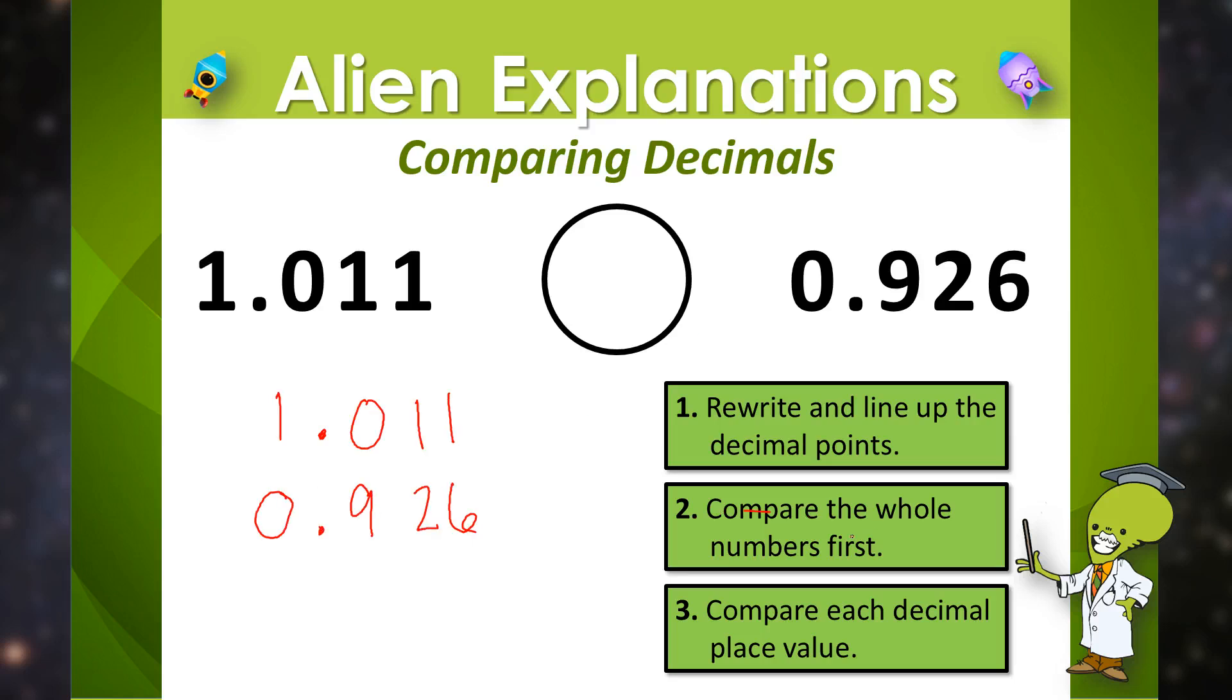The next thing we are going to do is compare the whole numbers. If I look in front of my decimal point I can see right away that this number is larger. So one and eleven thousandths is larger than nine hundred and twenty six thousandths.